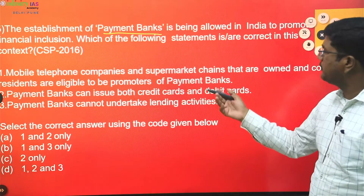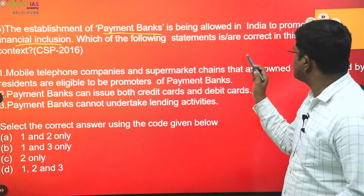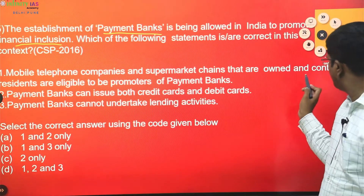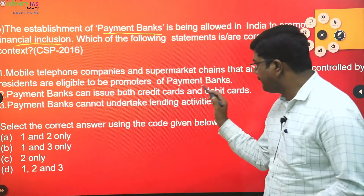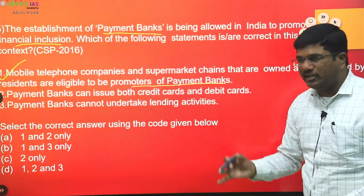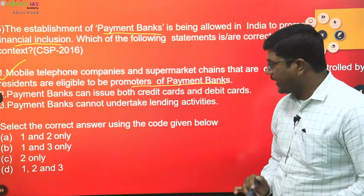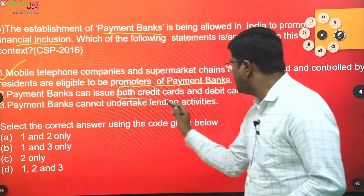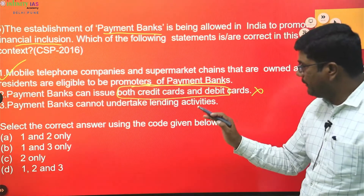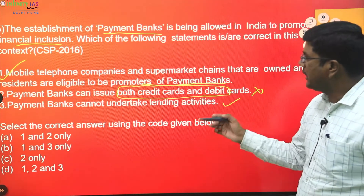Next: the establishment of payment banks is a new mechanism in the banking sector being allowed in India to promote financial inclusion. First statement — mobile telephone companies and supermarket chains owned and controlled by residents are eligible to be promoters of payment banks — yes, correct. Second statement — payment banks can issue both credit cards and debit cards — they don't have the facility of credit cards, so the second statement is wrong. Third statement — payment banks cannot undertake lending activities — yes, that is true, they only take deposits.